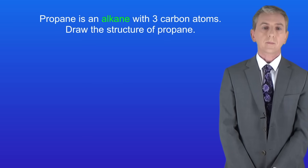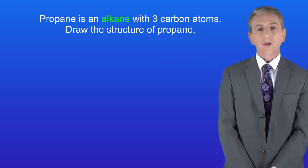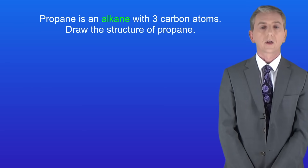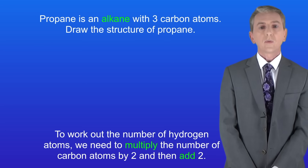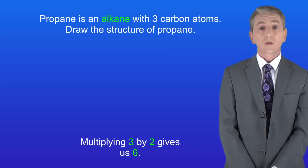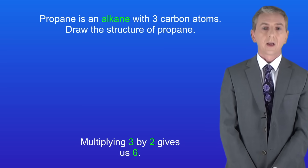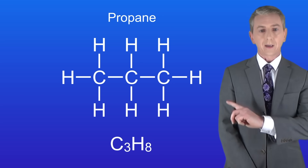Here's a sample question: propane is an alkane with 3 carbon atoms — draw the structure of propane. To answer this question you'll need to use the general formula to work out the number of hydrogen atoms. Pause the video now and try this yourself. Propane has 3 carbon atoms, so n equals 3. Multiplying 3 by 2 gives us 6, and adding 2 gives us 8 hydrogen atoms. I'm showing you the structure of propane here.